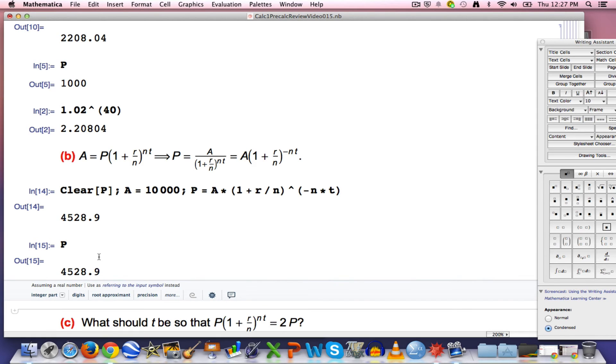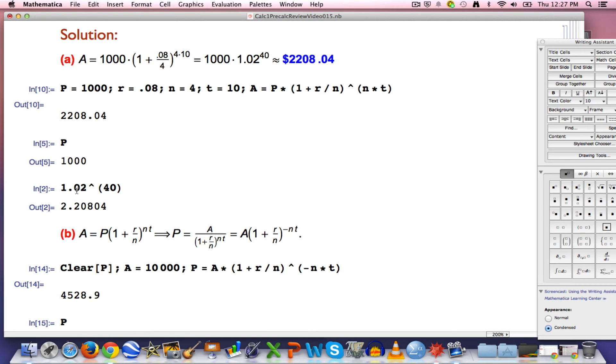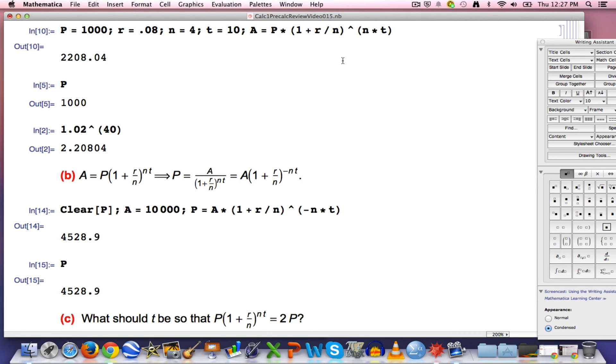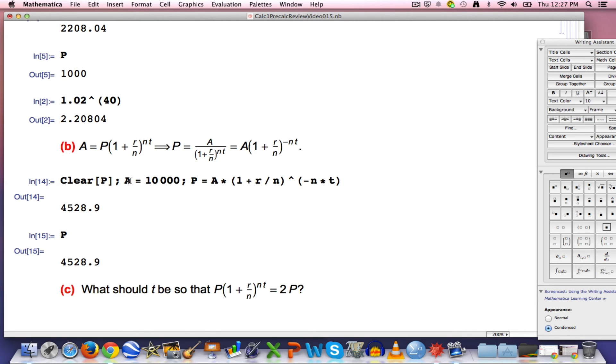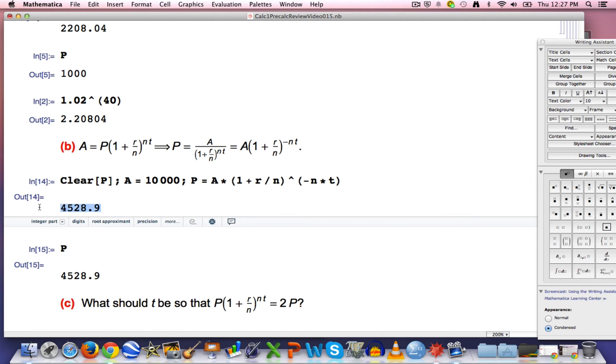Also would be good before I go into part C to realize we could have guessed that the answer would have been less than 5,000 here. We saw in part A that $1,000 over 10 years in this account more than doubled. And that's going to be the same no matter what your starting deposit is. No matter what your starting deposit is in this account over 10 years it will more than double. So since I want to get $10,000 in part B at the end and since the money more than doubles over 10 years the answer here has to be less than 5,000 and it is.